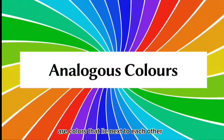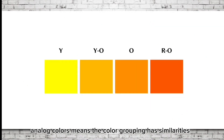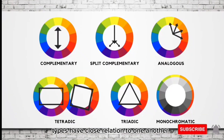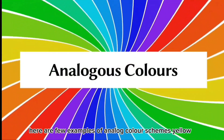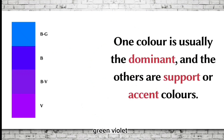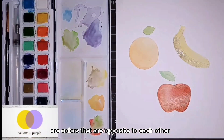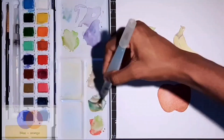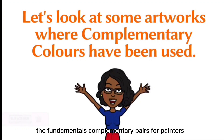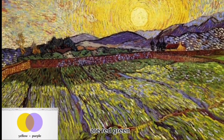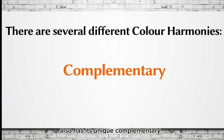Analogous colors are colors that lie next to each other on the color wheel, meaning they have similar qualities. Examples include yellow, yellow-green, green, violet, red-violet, and red. Complementary colors are colors opposite each other on the color wheel, having maximum contrast with each other. The fundamental complementary pairs for painters are red-green, yellow-violet, and blue-orange, though each intermediate color also has its unique complementary.